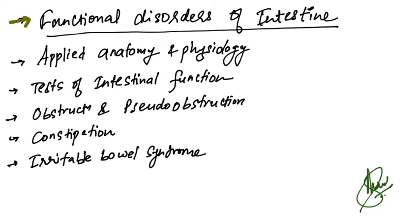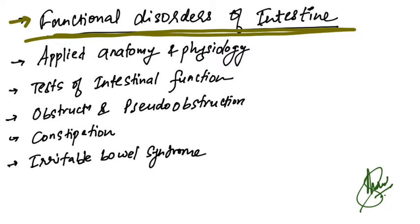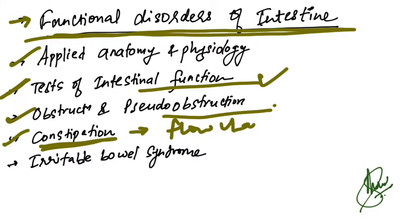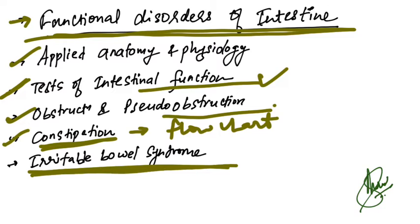Another new chapter is Functional Disorders of the Intestine, in which applied anatomy and physiology of the intestine is given. Tests of intestinal functions are newly added, along with obstruction and pseudo-obstruction. They have discussed constipation with flowcharts and tables, and Irritable Bowel Syndrome is explained with management.